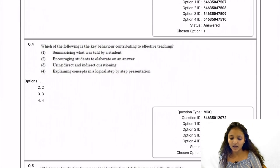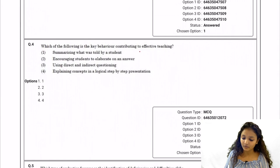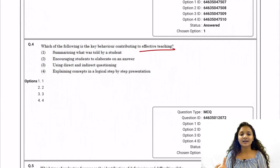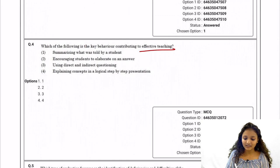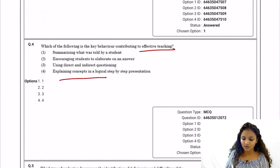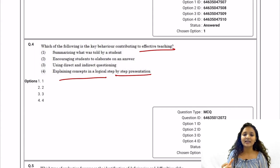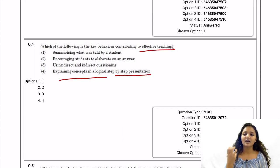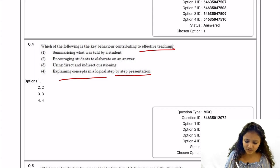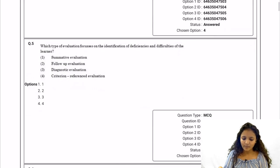Question 4: Which of the following is a key behavior contributing to effective teaching? Effective teaching is done by explaining concepts through logical, step-by-step presentation so that a student can understand everything correctly and knowledge is enhanced. Option number four is correct.